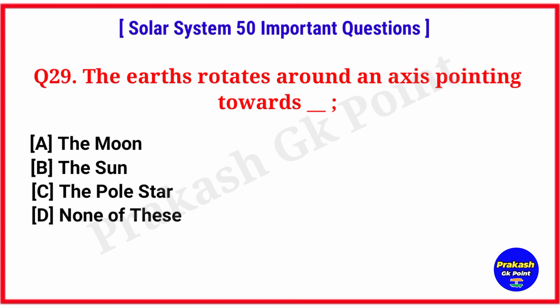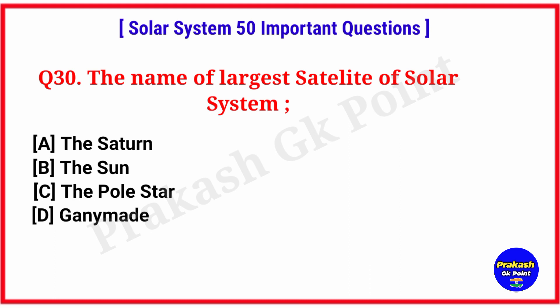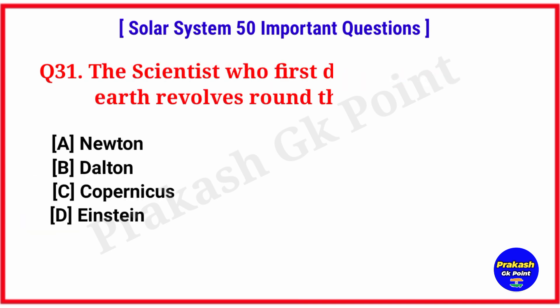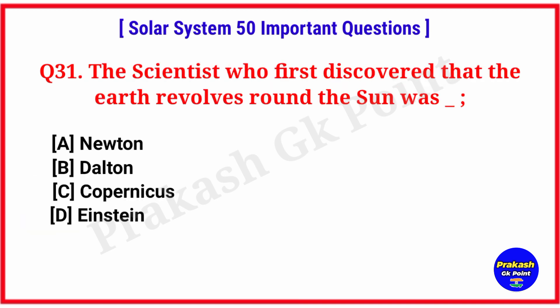The Earth rotates around an axis pointing towards? Answer: option C, the Pole Star. The name of the largest satellite of the solar system? Answer: option D, Ganymede. The scientist who first discovered that the Earth revolves around the sun was? Answer: option C, Copernicus.